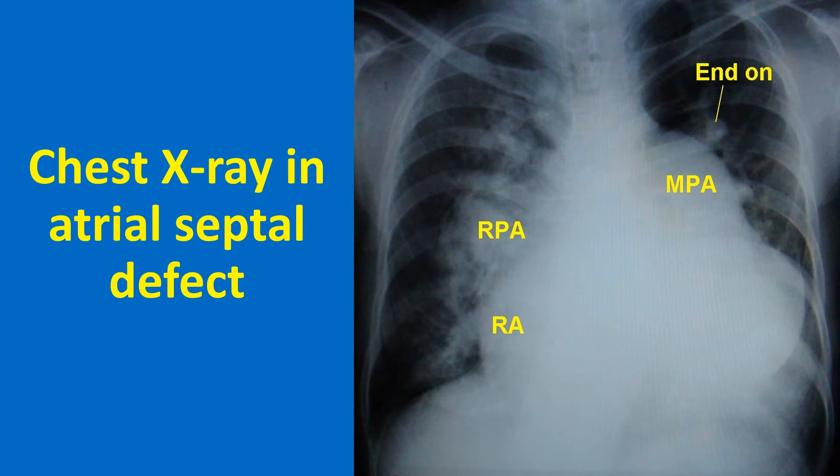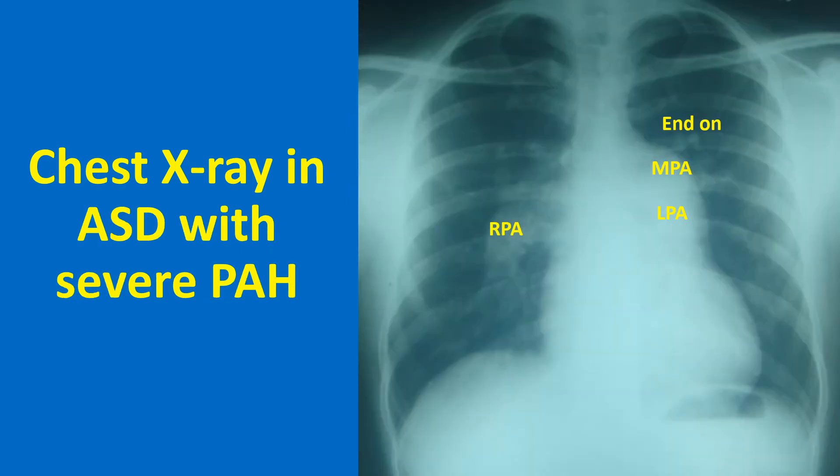Cardiomegaly is mainly due to grossly dilated right atrium in atrial septal defect. The right atrium is not enlarged in the other two varieties of Eisenmenger syndrome. In ventricular septal defect with large left-to-right shunt, the cardiac size comes down as pulmonary hypertension develops and the shunt decreases. Cardiomegaly in VSD and PDA with large left-to-right shunt are due to left ventricular enlargement, but this comes down with the development of pulmonary hypertension. That is why cardiomegaly is not a feature of Eisenmenger syndrome due to VSD and PDA.